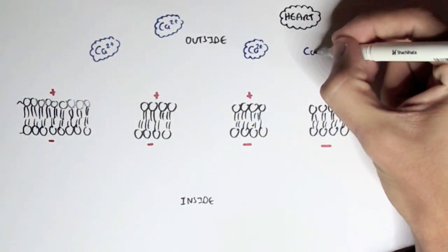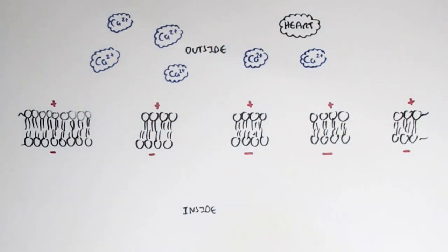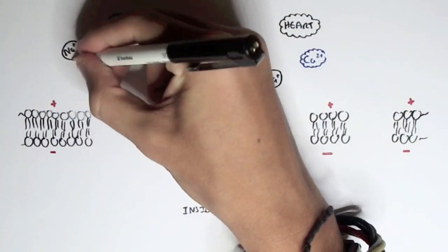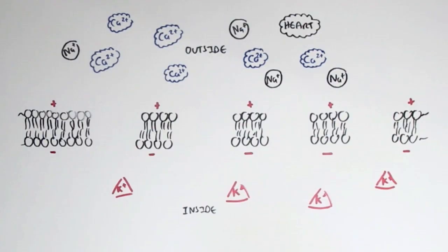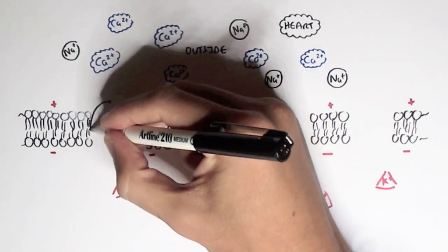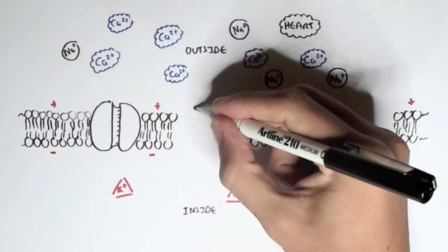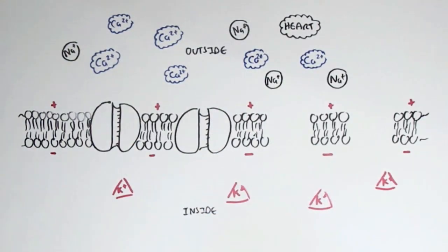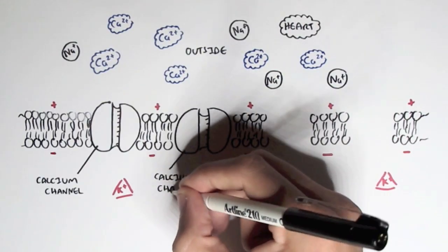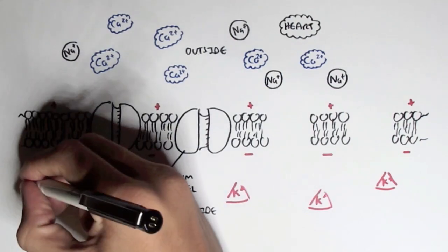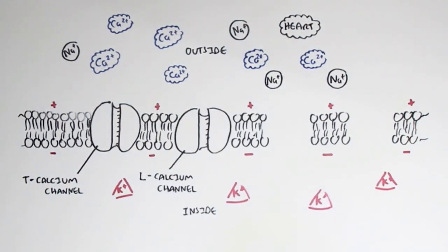There are three main ions we're going to look at in the cardiac cells. On the outside, we have more calcium and sodium ions, which are positively charged, and on the inside we have more potassium ions, which are also positively charged. When these different ions move from one side to the other through protein channels — protein pores — they will change the membrane potential. For calcium ions within the heart, there are two types of protein channels: an L-type and a T-type. When calcium ions move inside the cell from the outside through these protein channels, they will change the membrane potential.